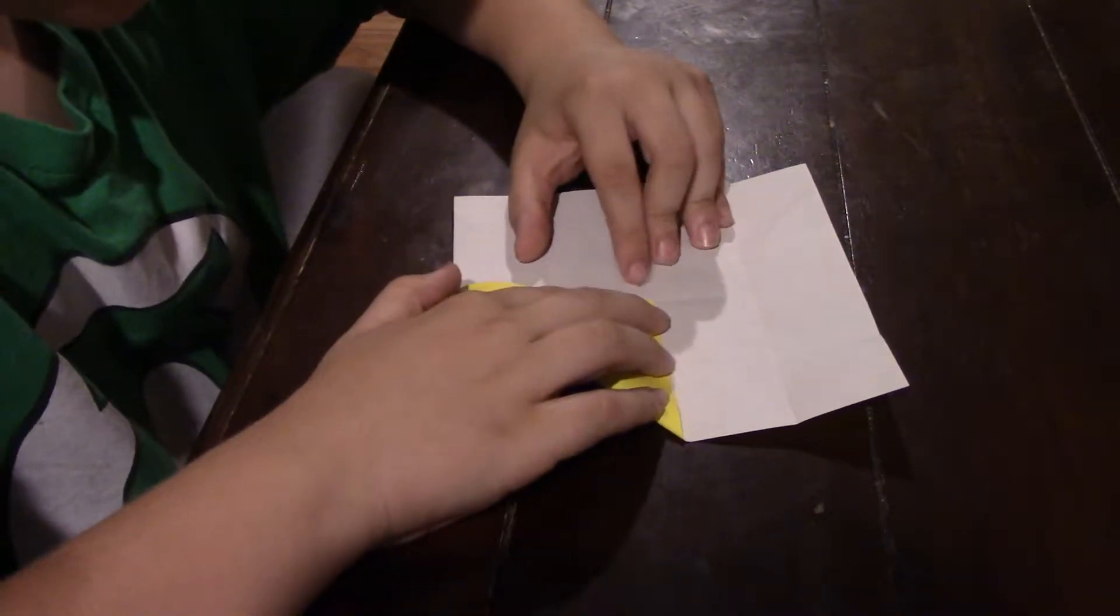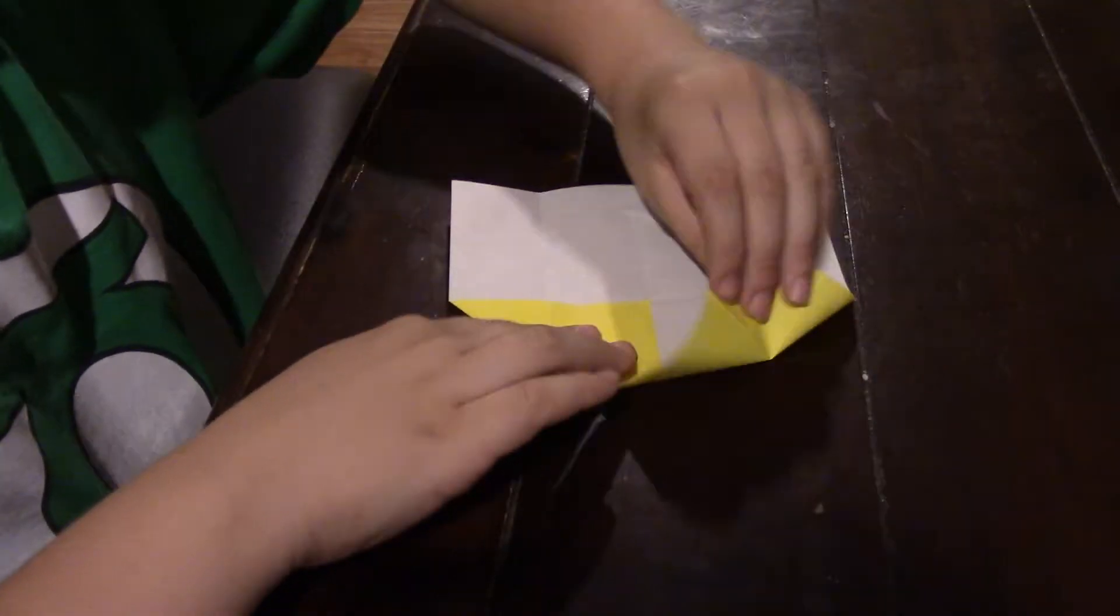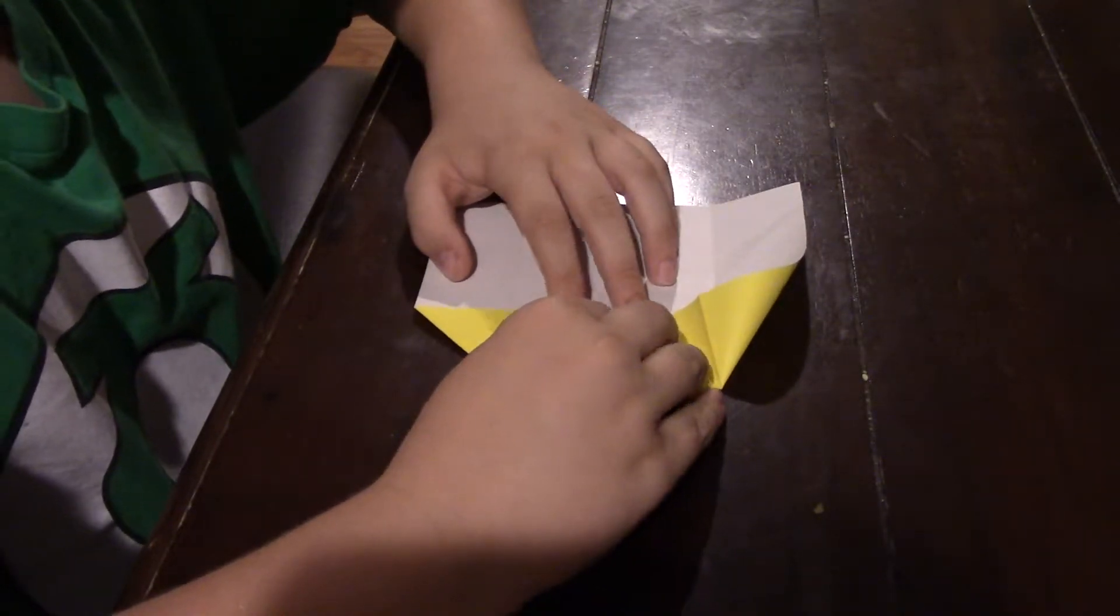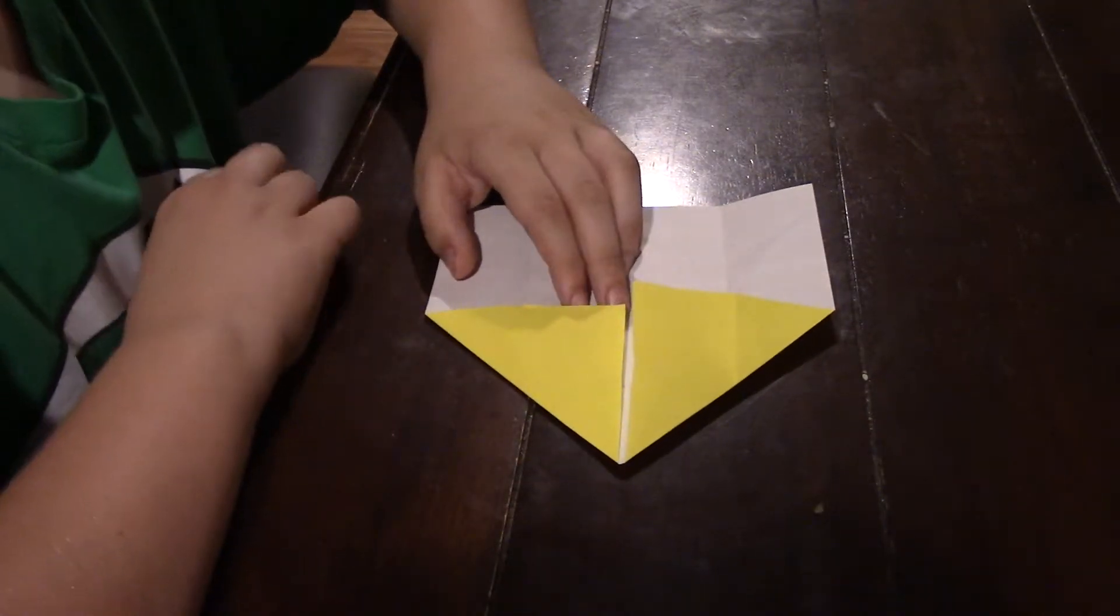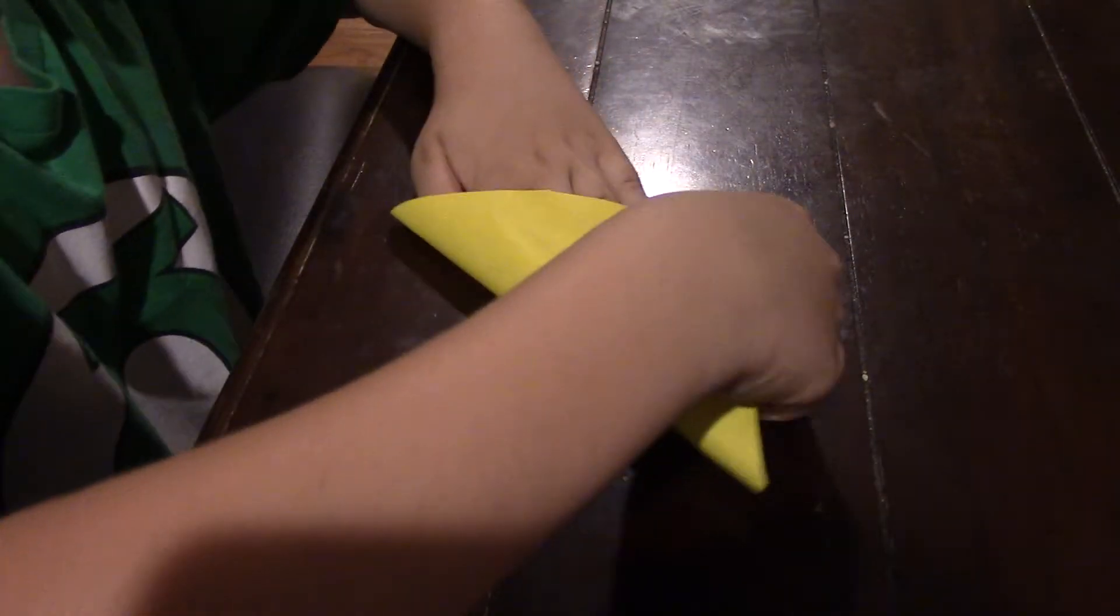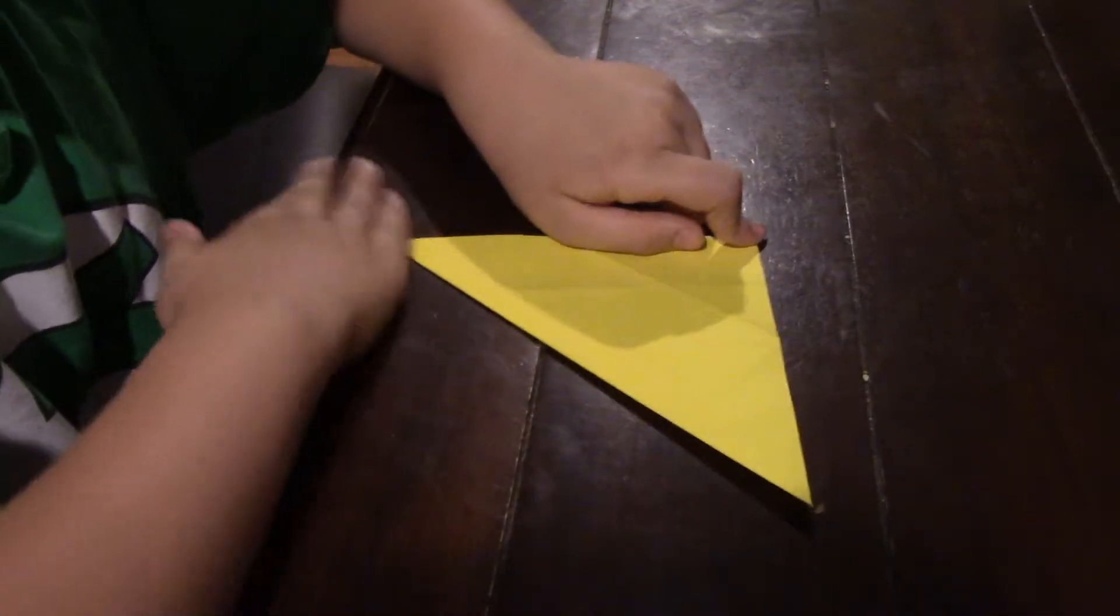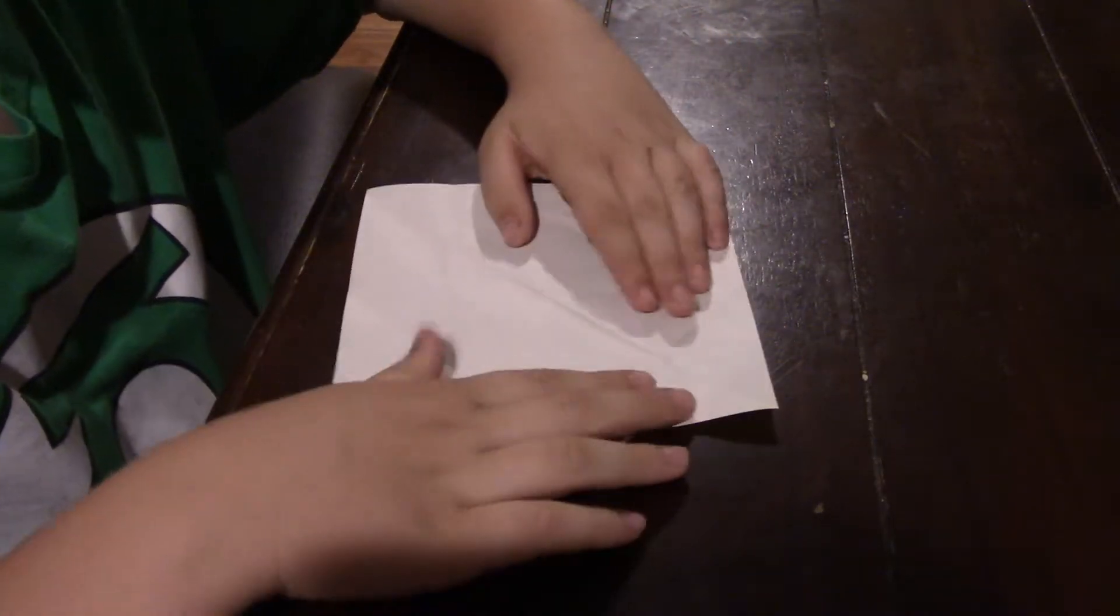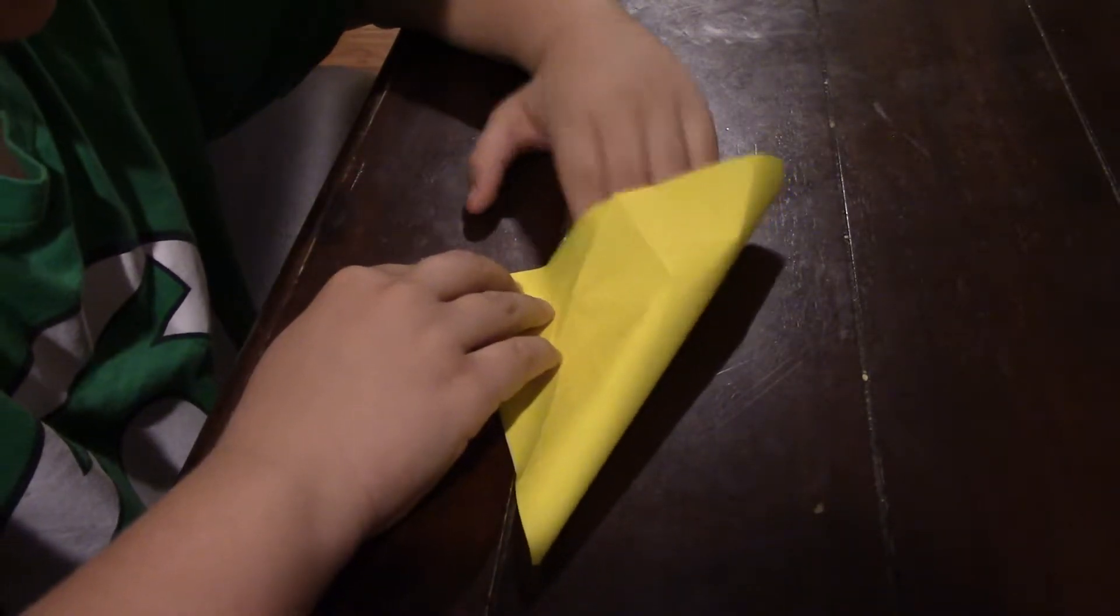Now fold that corner up, and then take the other corner and fold it. Then unfold it. Then fold it again like this, diagonal to diagonal, and then unfold it. And then fold it again from diagonal to diagonal.